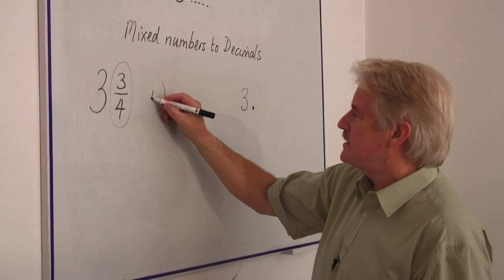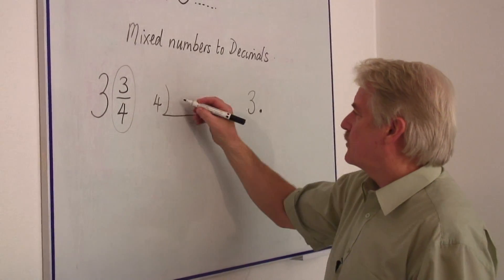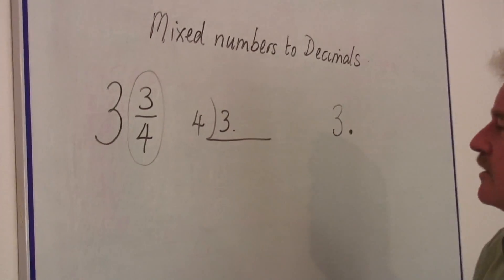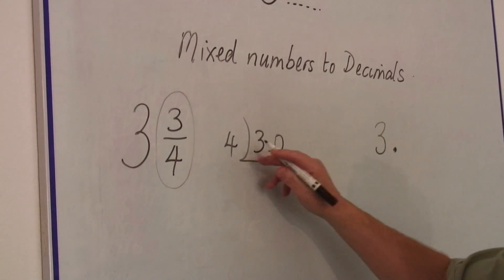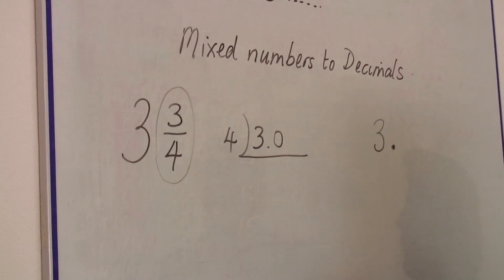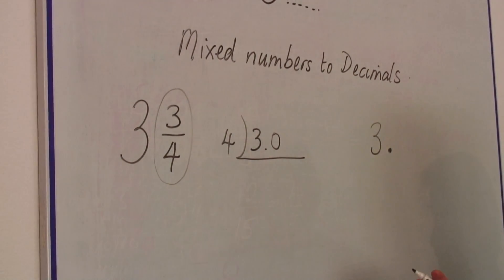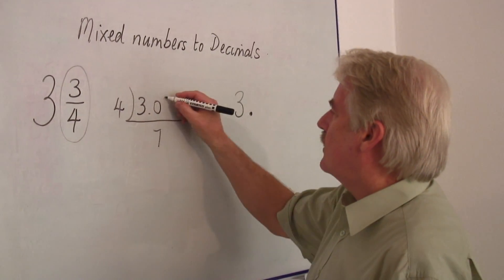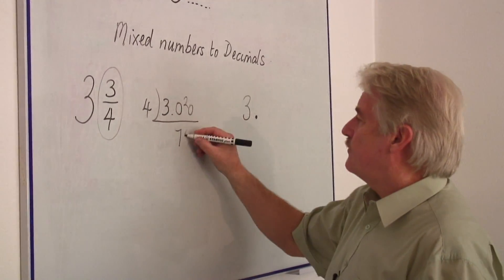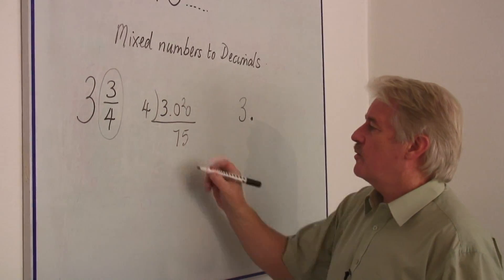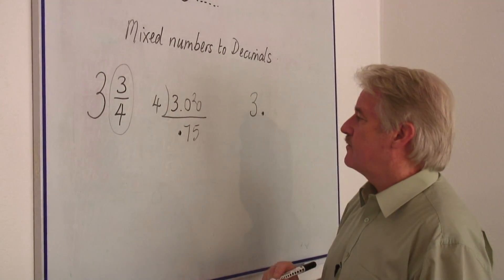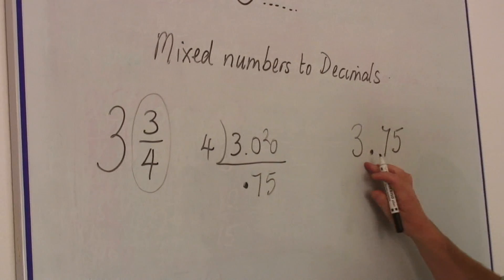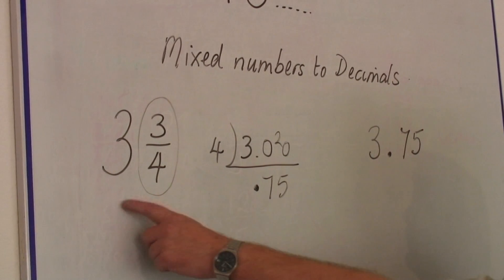So sometimes we write it down like this and we put the three here. And we say fours into three doesn't go. So we have to bring a naught down. Fours into thirty. Seven fours are twenty-eight. So we've got seven and two left. And five fours are twenty. So we get point seven five. So my answer here is point seven five. Three point seven five. Three and three quarters.